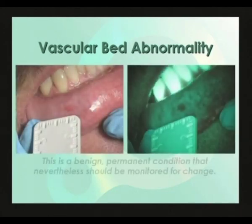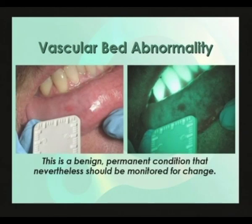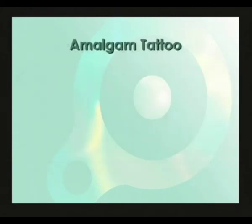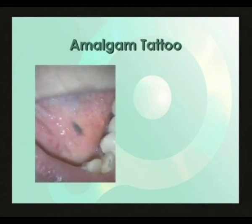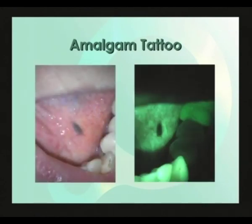Here is an example of permanent dilation of the vascular bed — a benign permanent condition that nevertheless should be monitored for change. This is an amalgam tattoo, which shows up as dark in white light just as it shows up dark under VELscope due to light absorption. The presence of filled teeth nearby would help confirm the identification of this particular lesion as an amalgam tattoo.